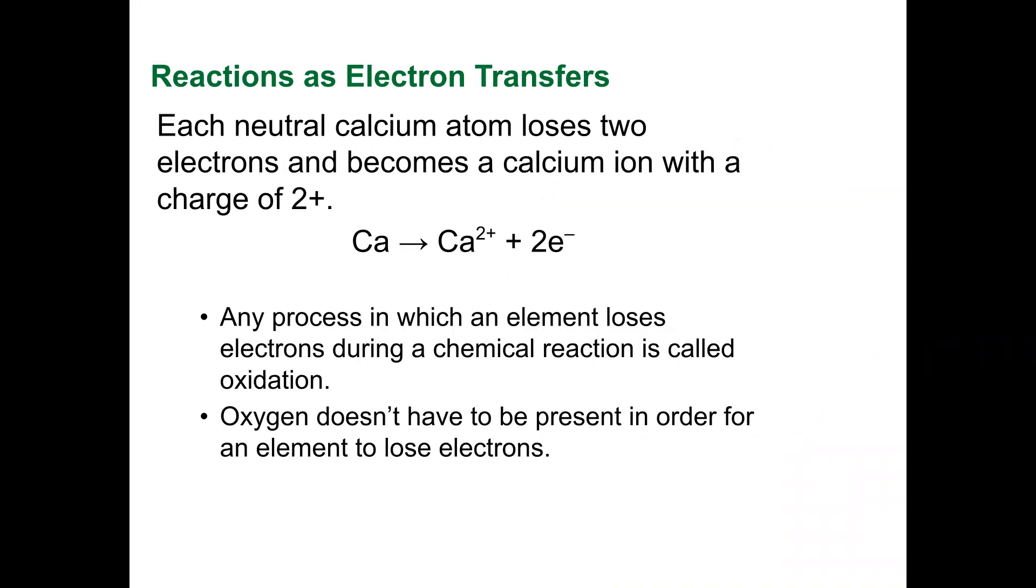Each neutral calcium atom loses two electrons and becomes a calcium ion. When it loses two electrons, it has a plus two charge because the electrons are negative. Any process in which the element loses electrons during a chemical reaction is called oxidation. It's called oxidation because it usually happens in these reactions with oxygen. But basically, you're losing electrons.